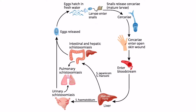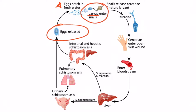This diagram shows the life cycle of schistosoma species. We'll start with the egg. Once released, these eggs will hatch in freshwater, and this releases larvae. These larvae will then enter freshwater snails. Within the snails, the larvae will grow into mature larvae and then be released. These mature larvae are called cercariae.